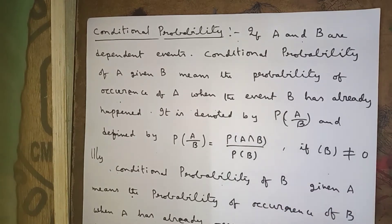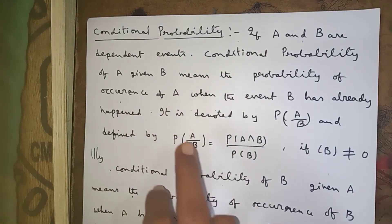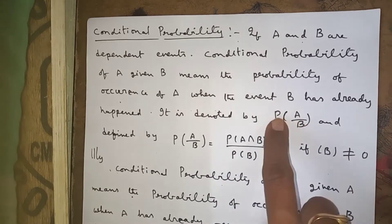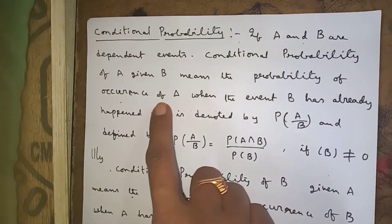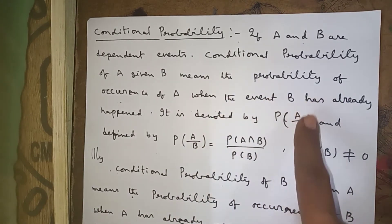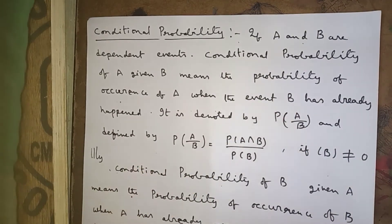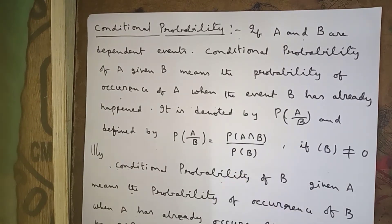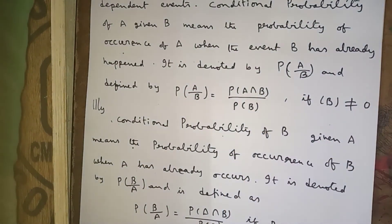Already event B has occurred; now we are finding the probability of occurrence of A. It is denoted by P(A | B). The formula is: P(A | B) = P(A ∩ B) / P(B). This is the definition of conditional probability, which we use in Bayes' theorem and many other theorems.